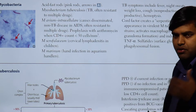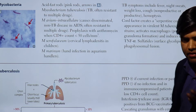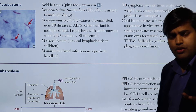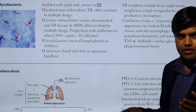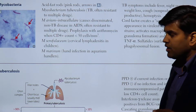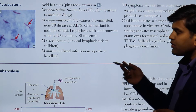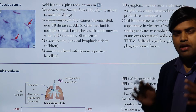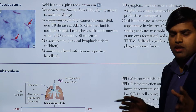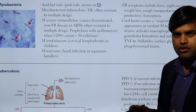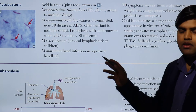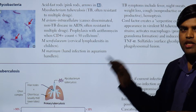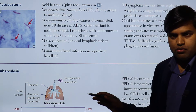Initially we talked about Nocardia and Actinomyces, which are branching filamentous bacteria. Mycobacterium tuberculosis and the mycobacterium species are gram positive — they fall under gram positive aerobic organisms, but they are weakly gram positive.